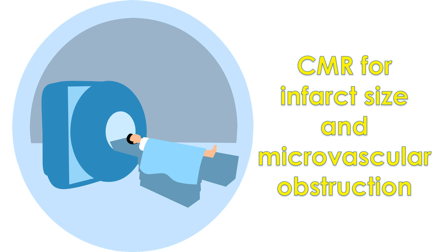Cardiac magnetic resonance imaging was used to assess infarct size and microvascular obstruction. They noted worse thrombolysis in myocardial infarction flow before and after primary coronary intervention in those with a shock index of 0.62 or more.